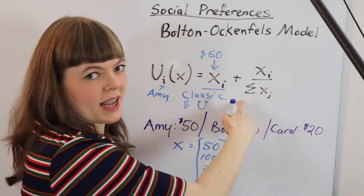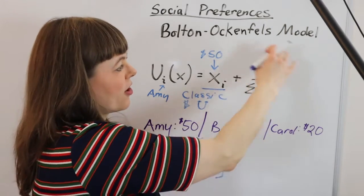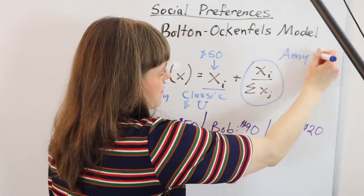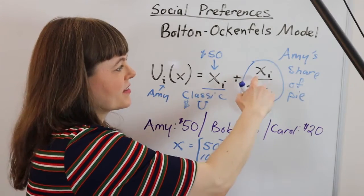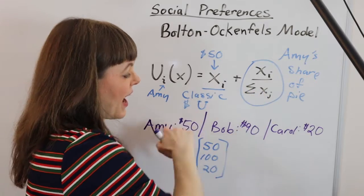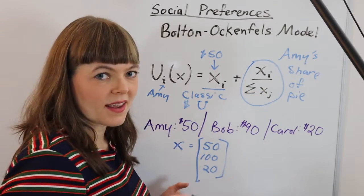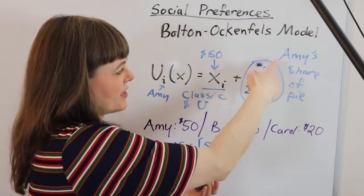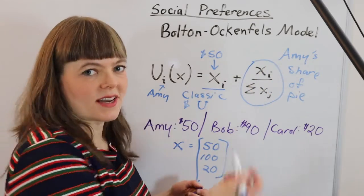This term is going to capture Amy's share of the total pie. So the numerator is how much money Amy has. The denominator is just adding up everybody's amount of money, and that's going to give what percent of the total pie belongs to Amy.